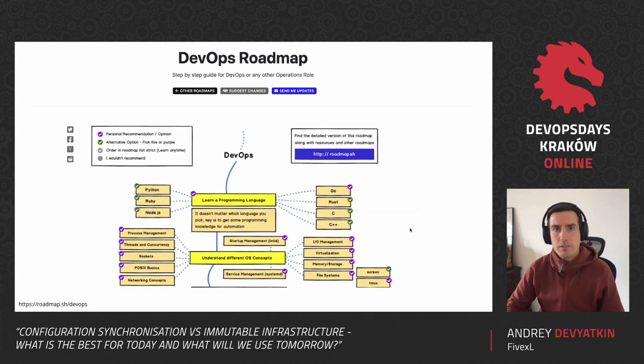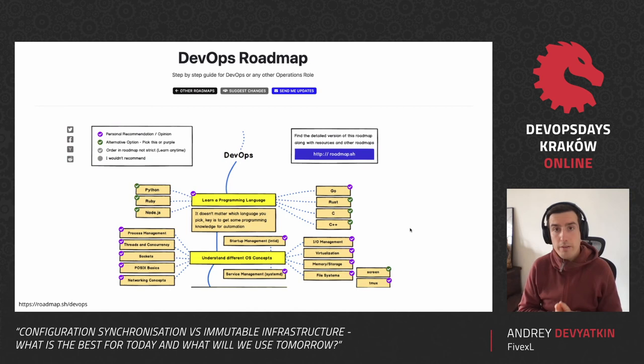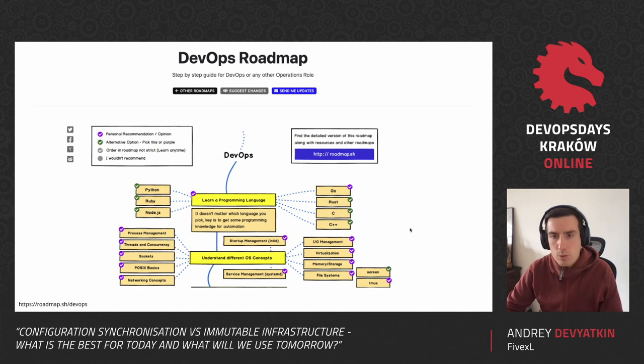With this presentation, I had a little bit of trouble, and the trouble started with a DevOps roadmap. Everything that surrounds DevOps nowadays is very tool-centric. If we take this DevOps roadmap in particular, you could see we learn a programming language, then we start to look into process management and tools, tools, tools.